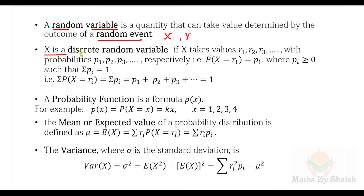X is a discrete random variable if it takes values R1, R2, R3, ... with probabilities P1, P2, P3, ... respectively. So the probability that X equals R1 is P1, and so on. All probabilities Pi are greater than or equal to zero (non-negative), and the sum of all probabilities equals 1 (total probability is 1).